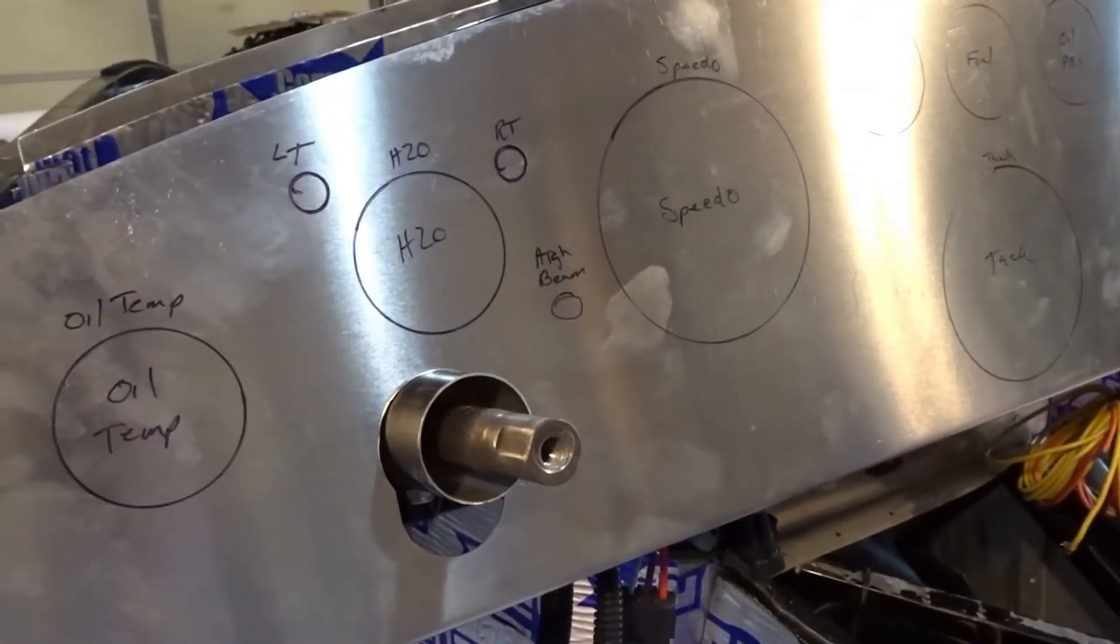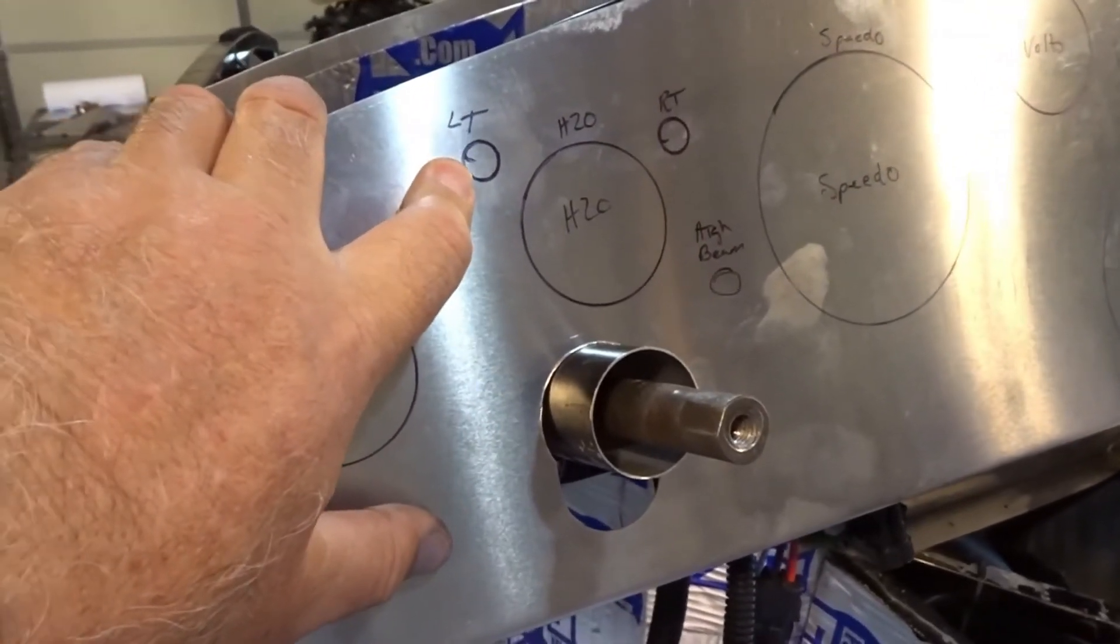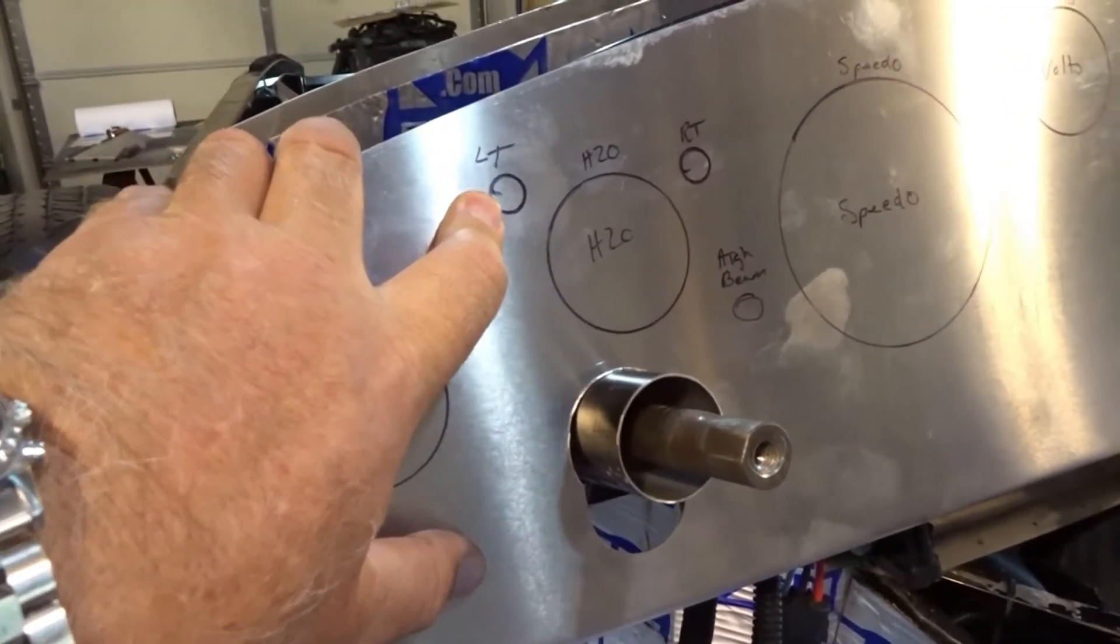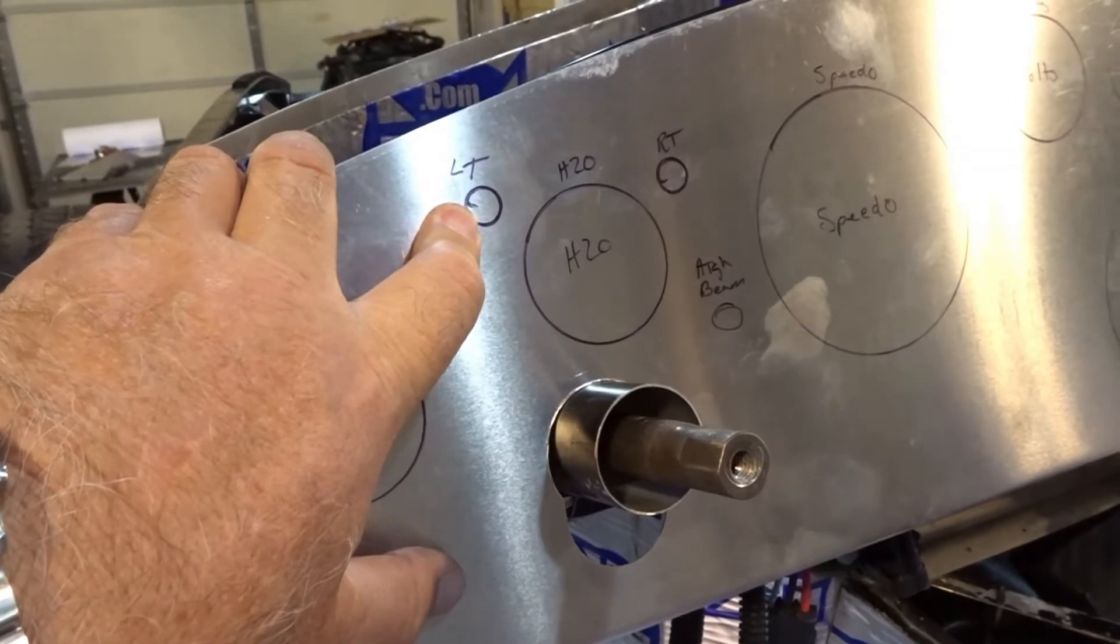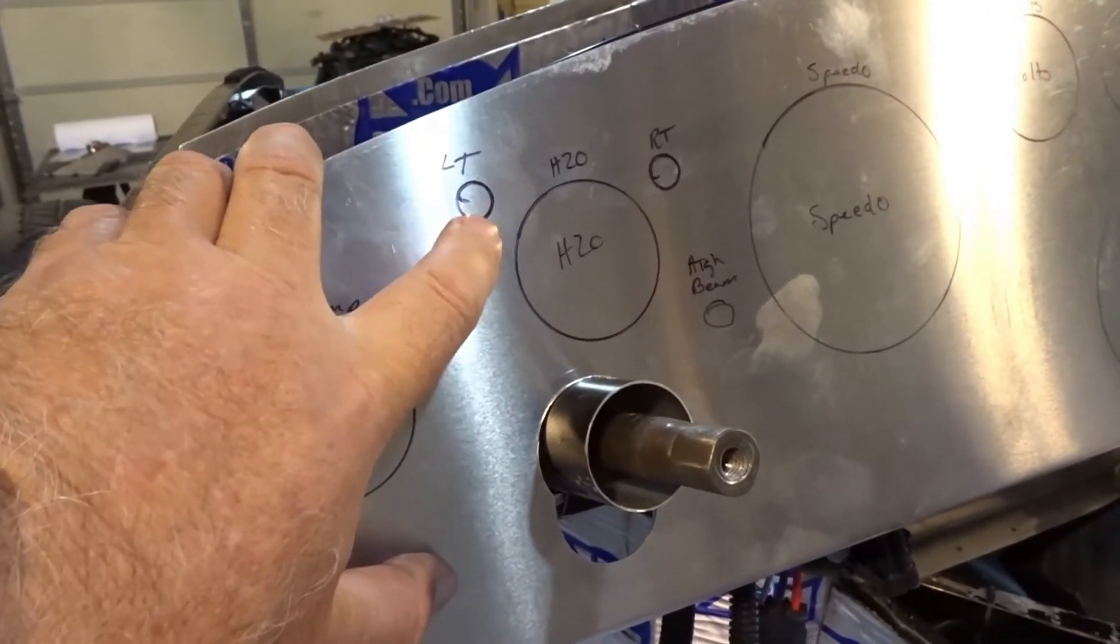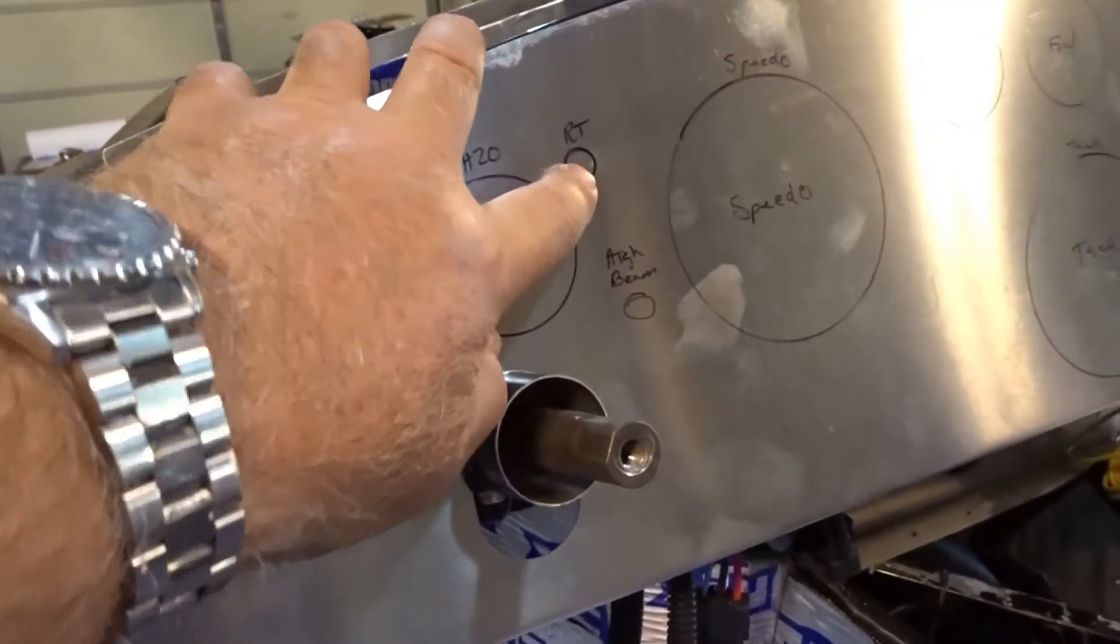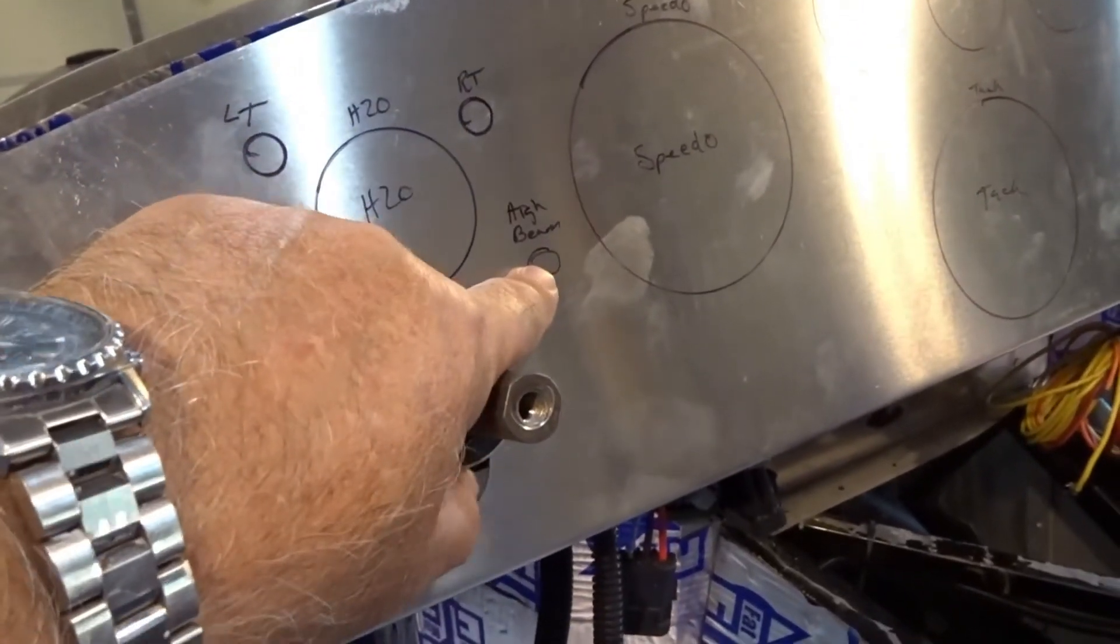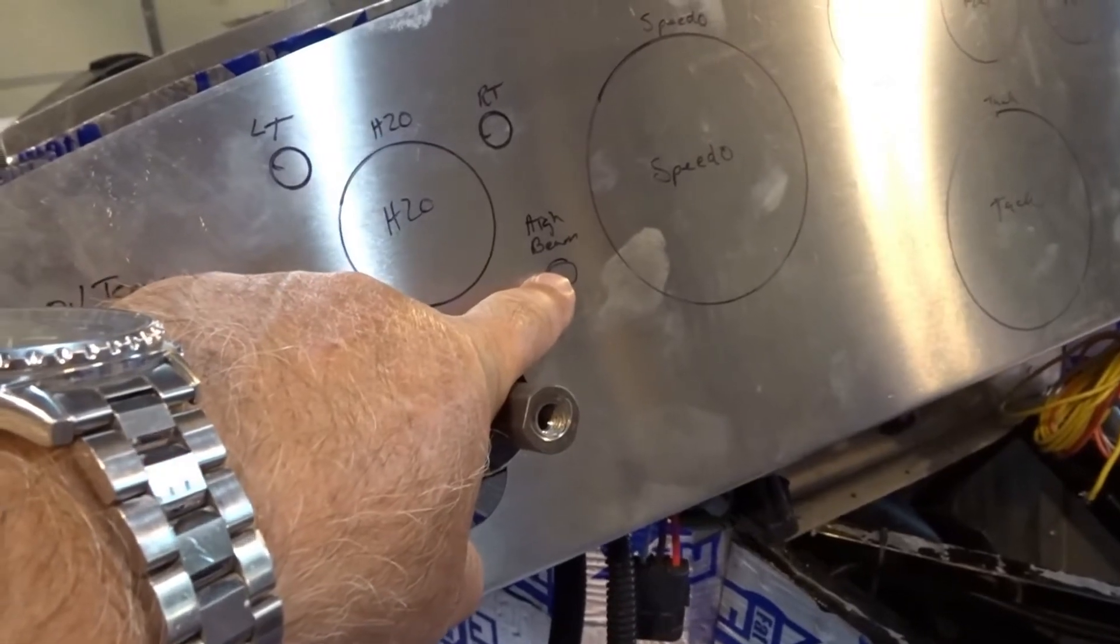The only other things that we changed on here is, on the SE layout, we would have a high beam indicator here. And we would share one indicator light for both left and right turn signal. We changed that so that the left turn signal will be here, right will be here. And we're going to add the high beam next to the speedo gauge right here.